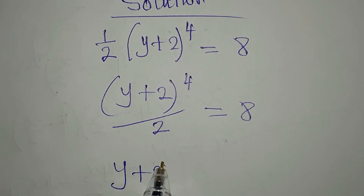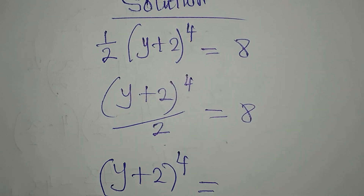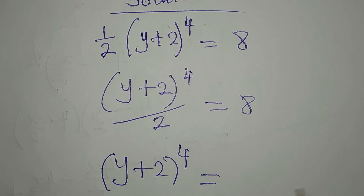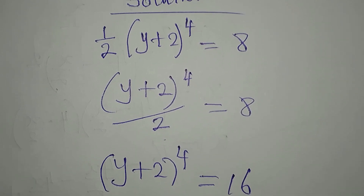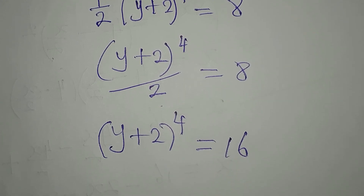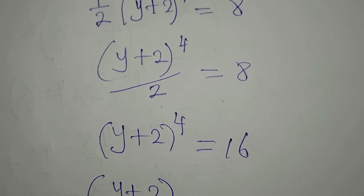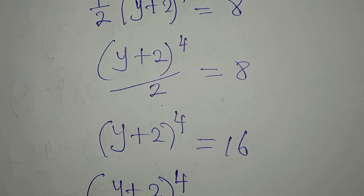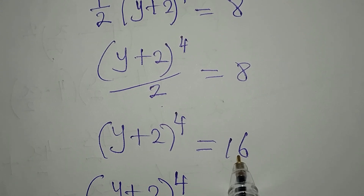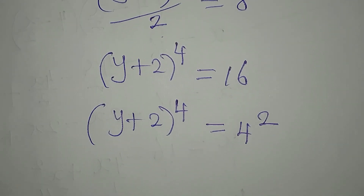So (y+2) to the power of 4 will be equal to 2 times 8, and that is 16. Now, we can write 16 in a special form — let's write 16 as 4 squared, so that we can apply the difference of two squares.